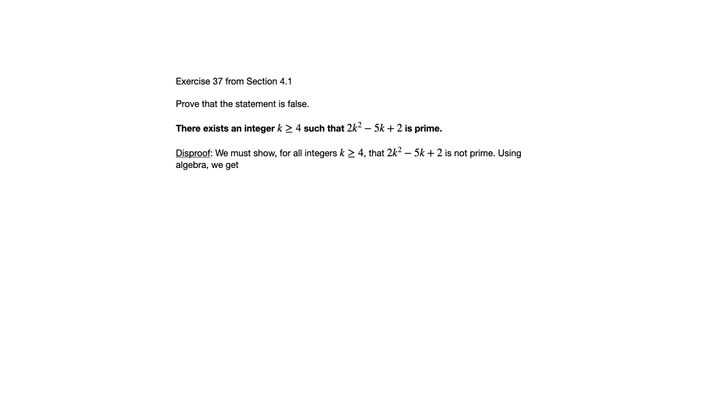What we really need to show is that for every integer k ≥ 4, 2k² - 5k + 2 is not prime. So in other words, to disprove the given statement, we're really proving its negation. So I start out here saying that—rewriting it as the negation. We must show: for all integers k ≥ 4, 2k² - 5k + 2 is not prime.